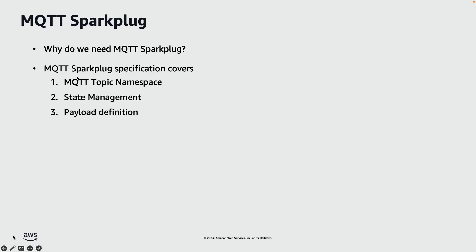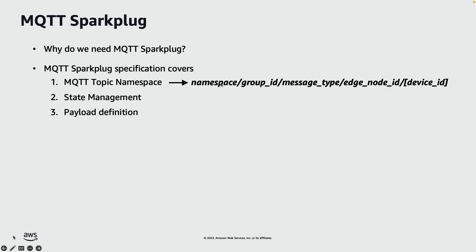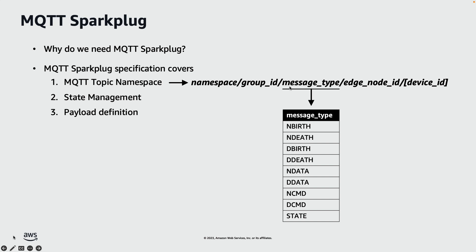The Sparkplug specification tackles this challenge for industrial IoT by providing a standard way of defining topics, state management, and payloads. Now let's look at each of these three areas, starting with the topic namespace. The spec provides semantics to standardize how topics are created. Here is a structure that shows various segments that make up a typical topic. The namespace indicates payload encoding, the group ID represents a group of devices, and the message type represents different types of messages, including whether it's a data or a command message.